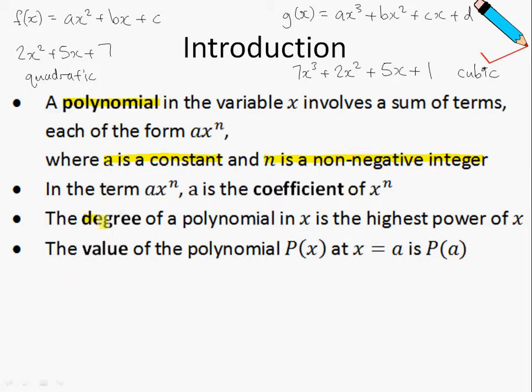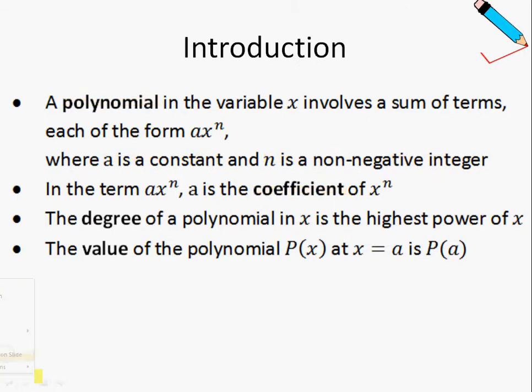Just bear with me for now. Next, the degree of a polynomial. I missed out the previous one. In the term ax to the power of n, a is the coefficient of x to the power of n. So, what is the meaning of the word coefficient? Let's say we have a polynomial 2x squared plus 7x plus 5.